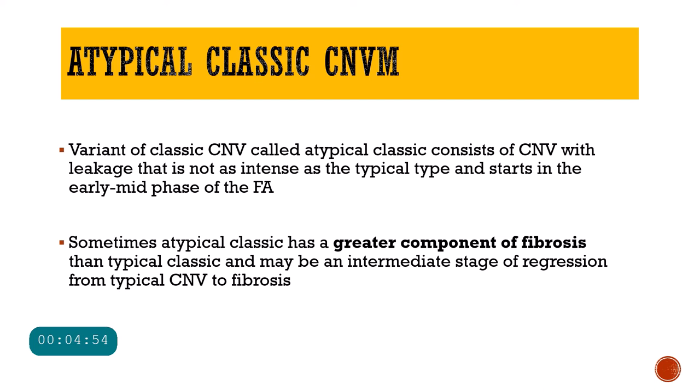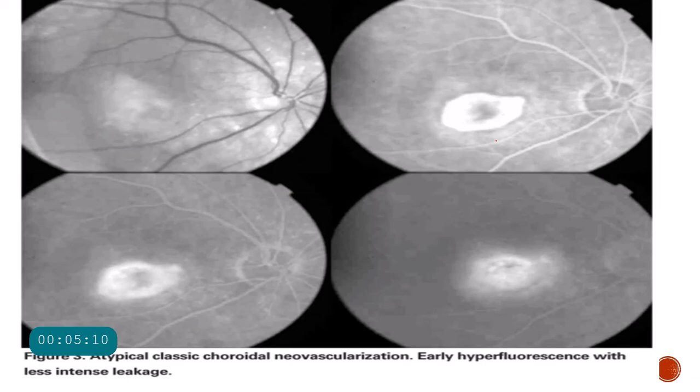In some cases, the classic CNVM will not show the amount of leakage expected in a typical CNVM. This kind of CNVM is called an atypical classic CNVM. The reason you do not see extensive leakage is because of a greater component of fibrosis in such CNVMs. As seen in the picture, the leakage is not as extensive compared to typical cases — this is an atypical classic choroidal neovascularization associated with fibrosis.